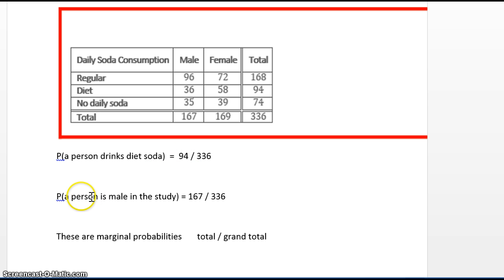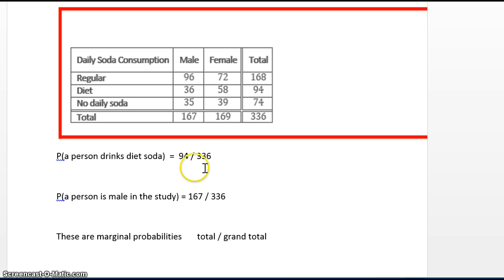For the probability that a person is male in the study: how many people are in the study? 336. How many of those are men? 167. So it's 167 divided by 336. Notice for both of these probabilities, the numbers in the numerator and denominator all came from the total row or column — that is called a marginal probability.